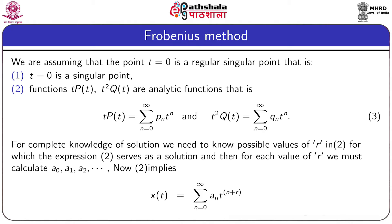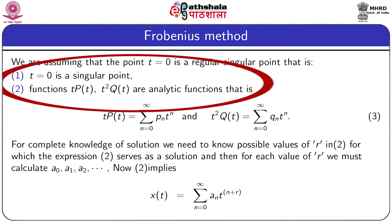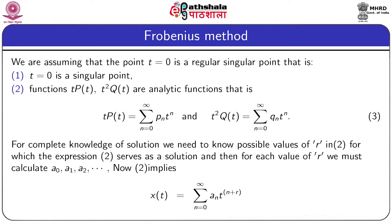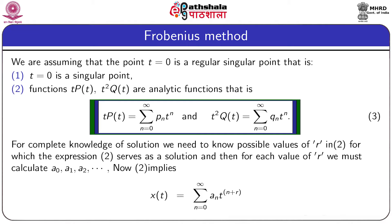We assume that t = 0 is a regular singular point, that is, t = 0 is a singular point and the functions t·p(t) and t²·q(t) are analytic functions. That is, we can express t·p(t) = Σ(n=0 to ∞) pₙtⁿ and t²·q(t) = Σ(n=0 to ∞) qₙtⁿ, given by equation 3.